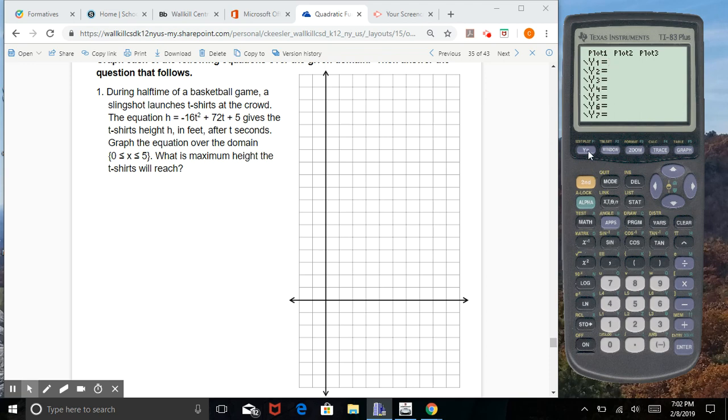So we turn on our calculator. We go to our y equals, which mine is already up, and type in negative - make sure you use a negative sign, not a minus sign - 16x squared plus 72x plus 5, and pull up our table. Mine is already set up in intervals of a quarter, but let's go back and change our table setting to 0 and 1. So that says we're starting at 0 and going up by 1 each time. Go back to our table.